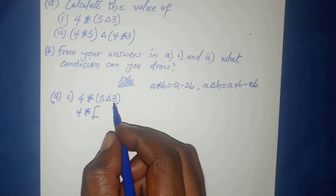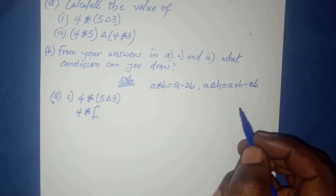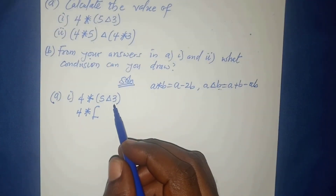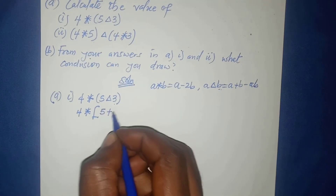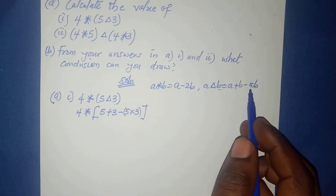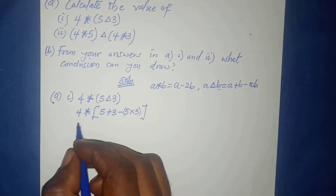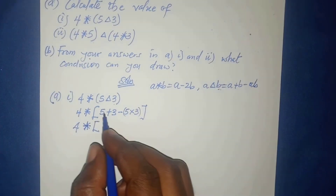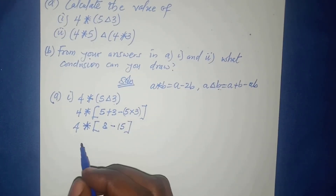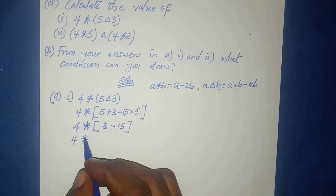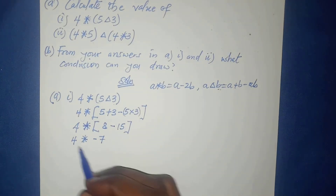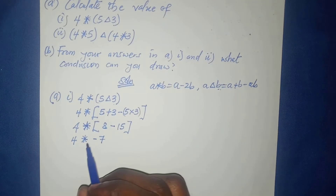So we have four star (five plus three minus five times three). Five plus three equals eight, minus five times three is fifteen, giving eight minus fifteen equals negative seven. Now we have four star negative seven, and this time we use the star definition.